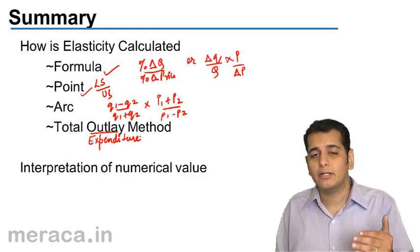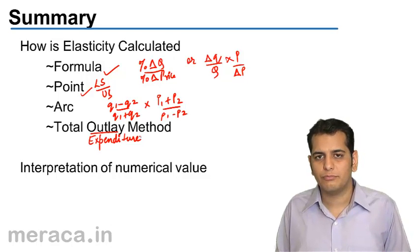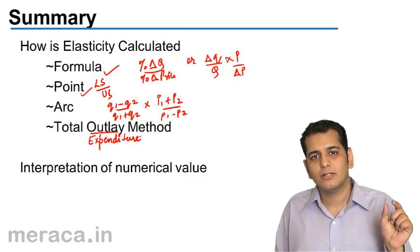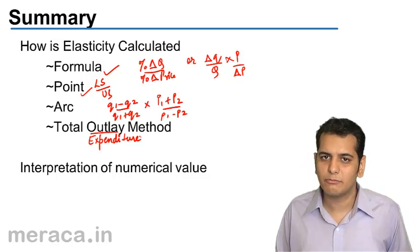And finally, when the total outlay reduces, we call it inelastic demand where the numerical would be less than one.